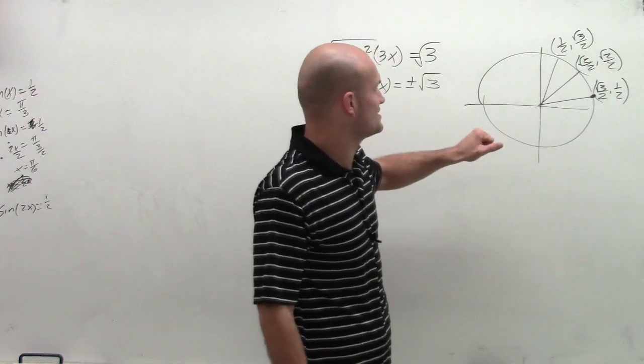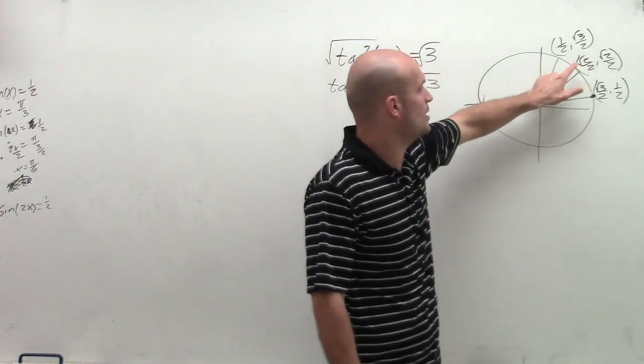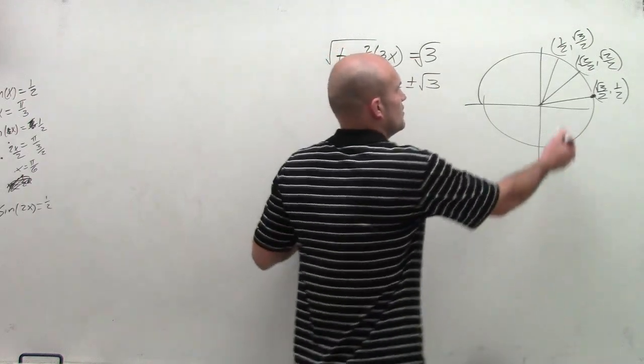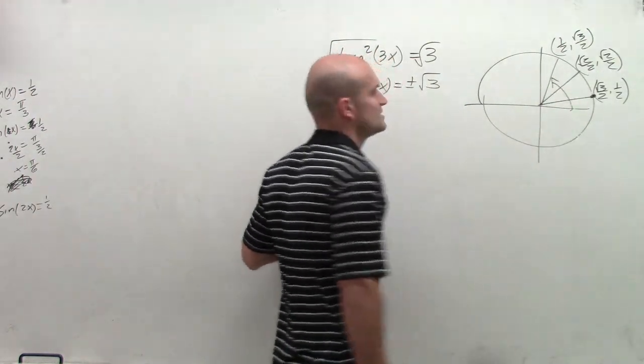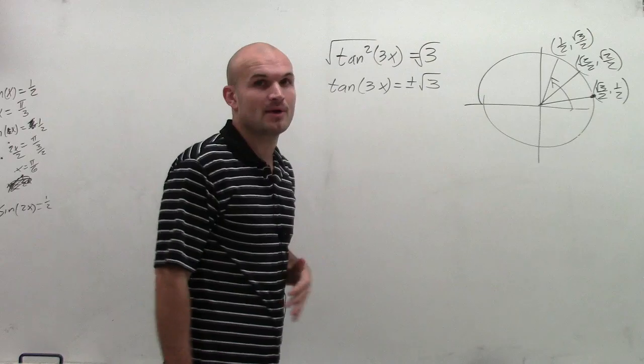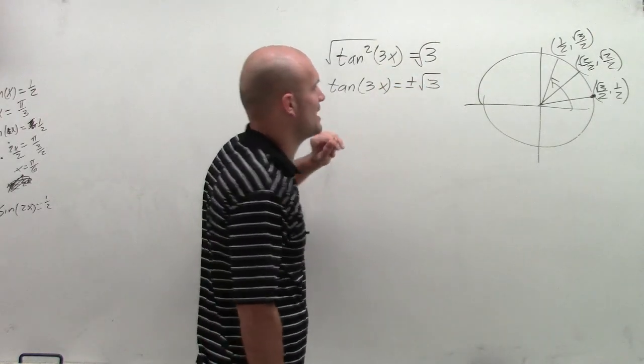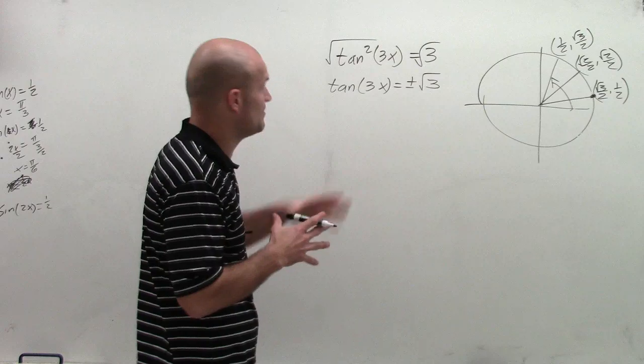But let's go and take a look and see, when will I take the y-coordinate over the x-coordinate? Will I produce the square root of 3? Well, when you go ahead and do your kind of simplifying and algebraic properties, you'll notice that you're going to have my angle is going to be pi over 3.